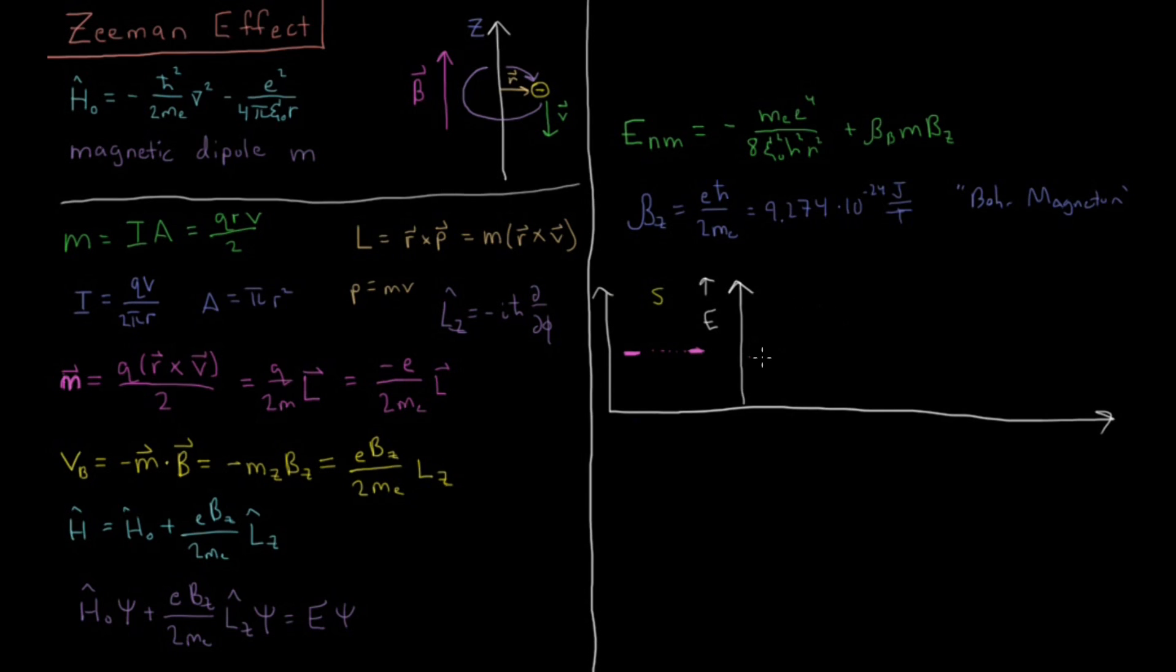For p orbitals, there are originally three p orbitals which would have been degenerate, but they will split into three different energy levels based on their value of m, whether it's +1, 0, or -1 for l equals 1, or p orbitals. So p orbitals, if you have a non-zero value for their magnetic quantum number m, they will have a separating of energy levels there. They will no longer be degenerate.